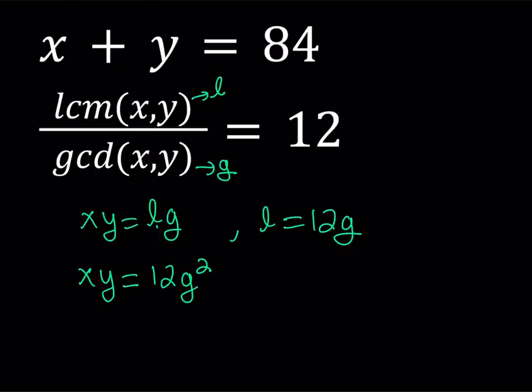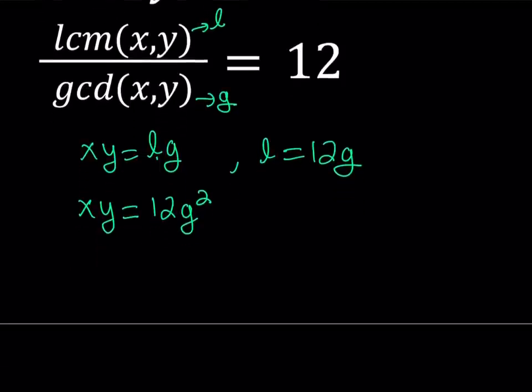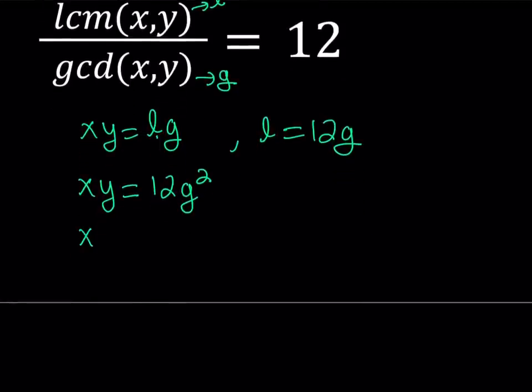We're going to replace L with 12G. That's going to give us xy equals 12G multiplied by G, which is 12G squared, where G stands for the greatest common divisor of x and y. So that's the first equation that we're going to be coming up with. But of course, we do have other equations as well. For example, we know that x plus y is equal to 84.